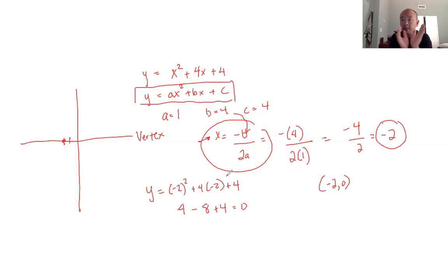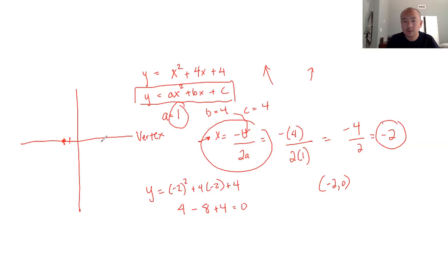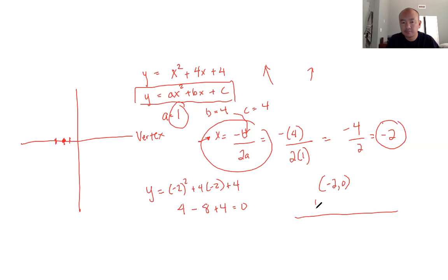Now what we want to do — remember, it's going to be a parabola, it's going to be shooting up. Since a is positive, the parabola is going to be pointing upwards. If a was negative, it would be pointing downwards. So we know the vertex and it points upward. From the vertex, we want to choose an x value so we know where the graph is going to go. I'm going to choose a value 1 to the right and 1 to the left, because the vertex is the midpoint. So I'm going to choose negative 1 and negative 3.